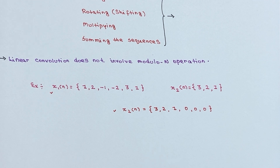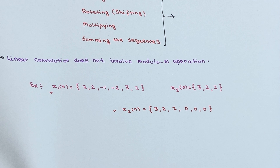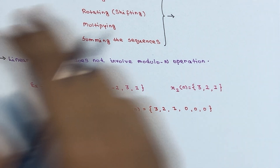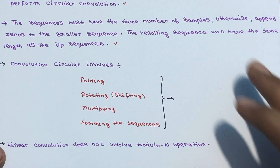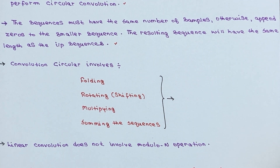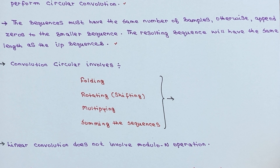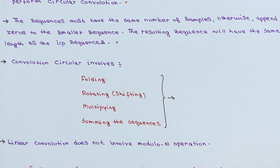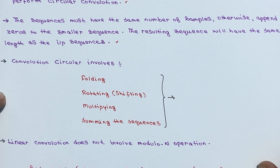To summarize the rules: at least one sequence must be periodic; if both are non-periodic, periodically extend one of them. Both sequences must have the same number of samples — if not, append zeros to the smaller sequence to match the size of the larger one. The resulting output sequence will have the same length as the input sequences.